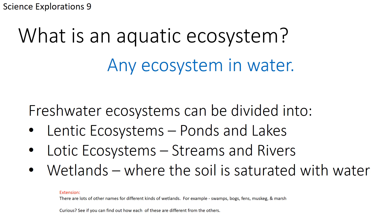Finally, there are wetlands — areas considered aquatic because the soil is saturated with water for at least part of the year. There are many different kinds of wetlands. As an extension, you can research the differences between a swamp, a bog, a fen, a muskeg, and a marsh, as there are lots of ways these are defined.